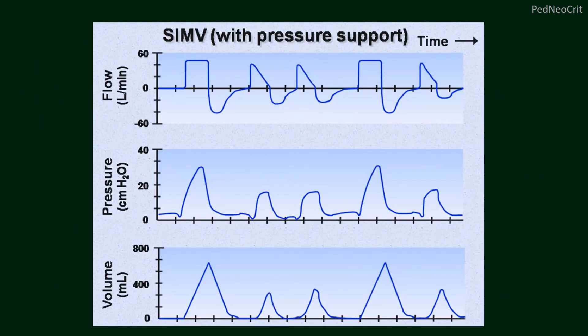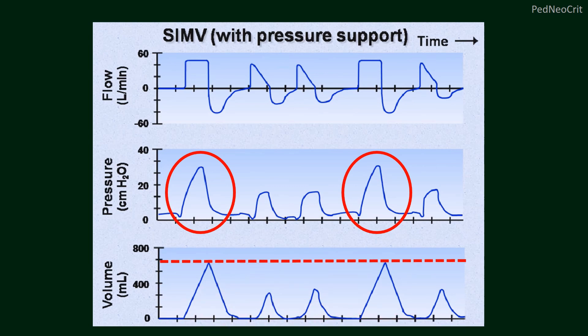These are the waveforms in SIMV mode — flow waveform, pressure waveform, and at bottom, volume waveform. The mandatory breaths provide a good amount of tidal volume, almost 700 ml. But in between these mandatory breaths, there are the patient's spontaneous efforts and pressure-supported breaths, in which the patient receives less tidal volume — less than 400 ml. So SIMV is actually a mix of mandatory breaths and spontaneous breaths.